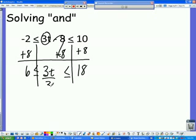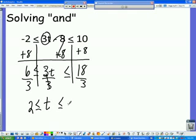And then I divide by 3. But remember, when I divide by 3 in the middle to get rid of it with the t, I have to do it on each side of each of the boundary lines. So, 6 divided by 3 gives you 2. We're going to cancel out, so I get t, less than or equal to 18 divided by 3 is 6. So my answer is 2 is less than or equal to t, which is less than or equal to 6.